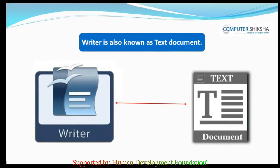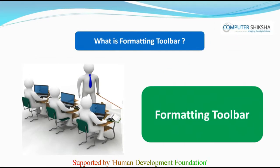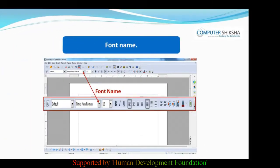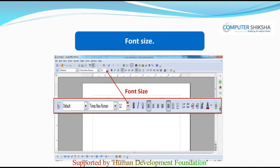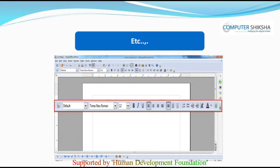Can you tell what is the other name for a writer file and in how many ways can we open the writer file? Writer is also known as text document and we can open this in many ways. What is a formatting tool? With the help of a formatting tool, we can make many changes on the desired text like change the writing style, size, bold, italic, underline, color change etc.